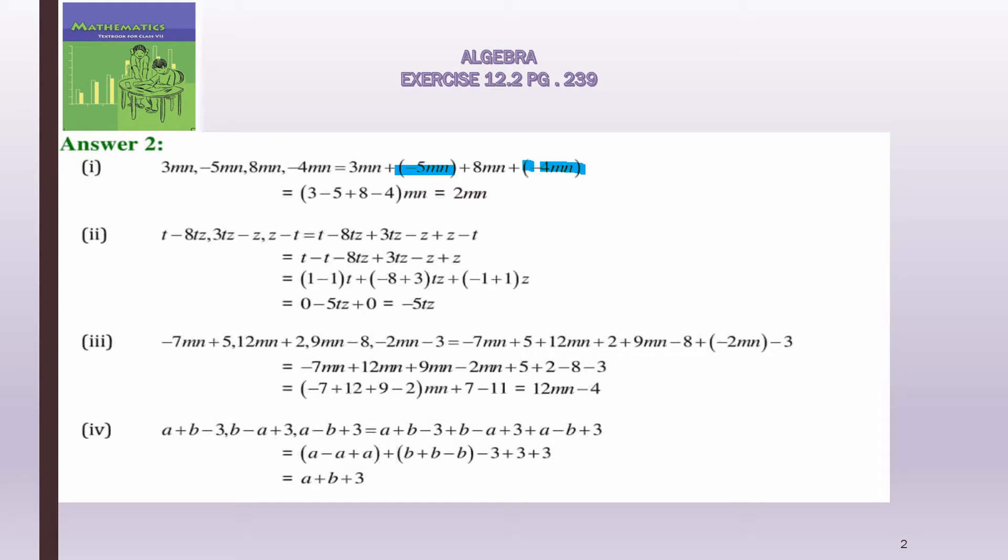If you are comfortable you can do it this way; otherwise you can do it directly: write 3mn + (-(5mn)) + 8mn + (-(4mn)). Either way, the answer is 2mn, because 3 - 5 = -2, -2 + 8 = 6, and 6 - 4 = 2 positive. So 2mn is the answer.